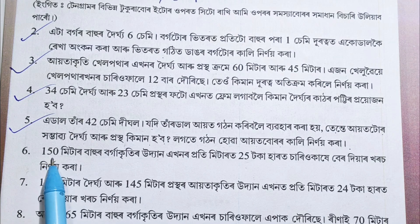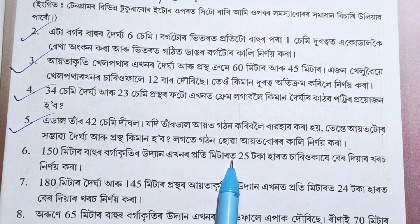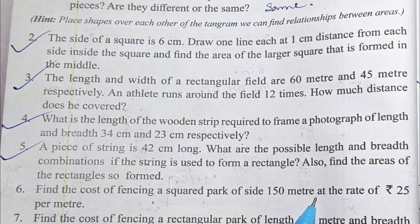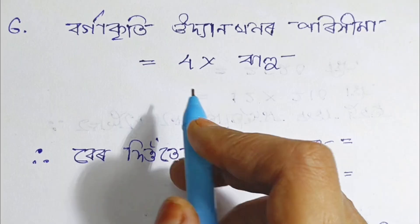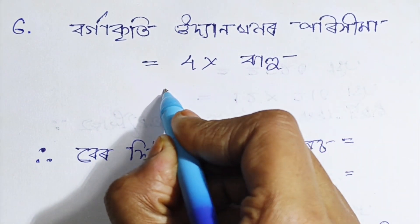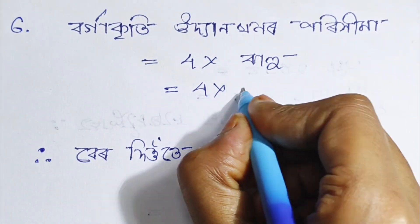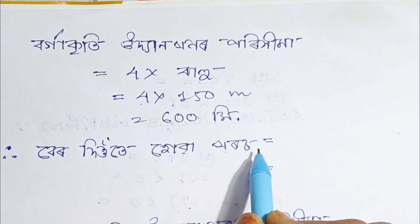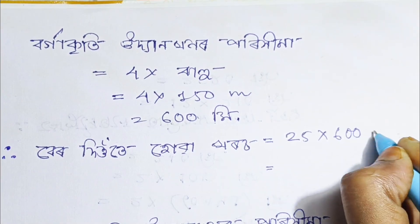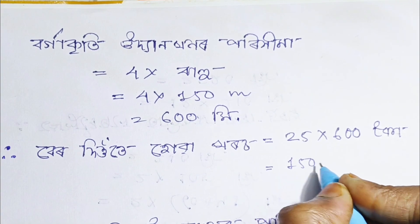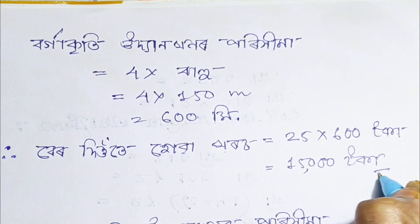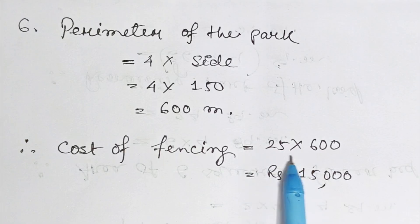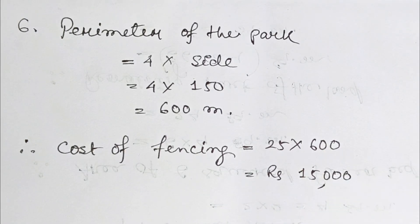Number 6: A square park of side 150 meter.